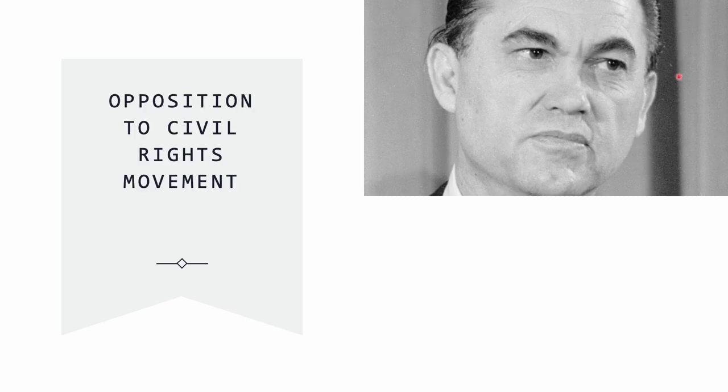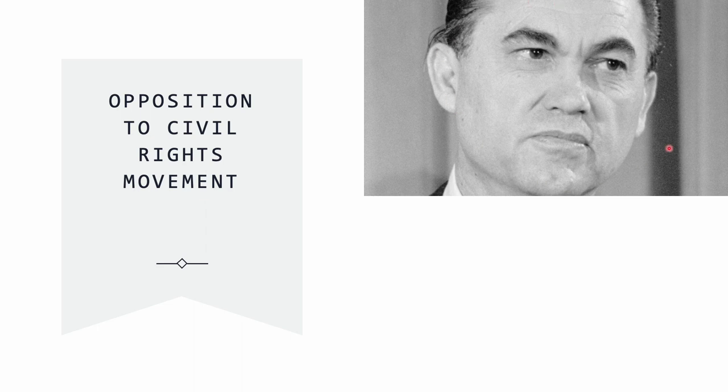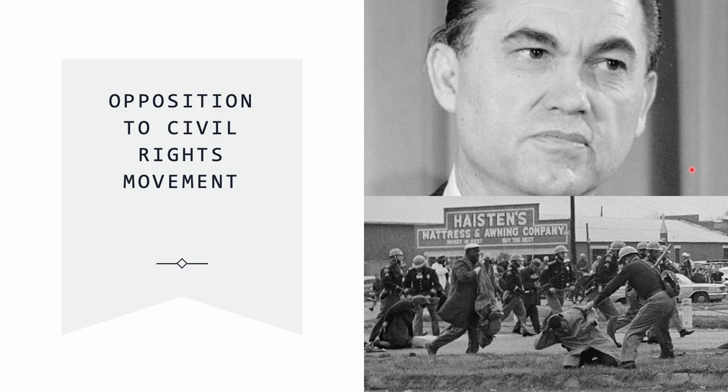This unit also discusses the role of opposers — people who were against the movement — like the segregationist Governor of Alabama, George Wallace. We will also examine the role of the Democratic Party in opposing the movement and opposing the leaders of the Civil Rights Movement.